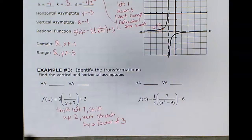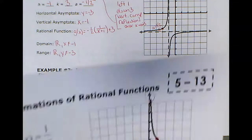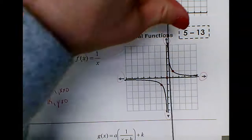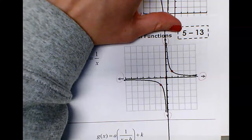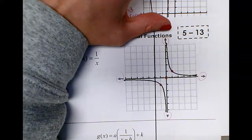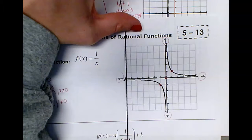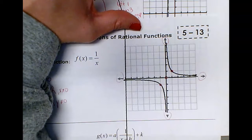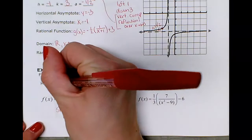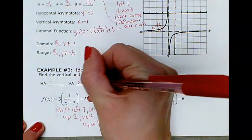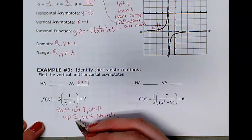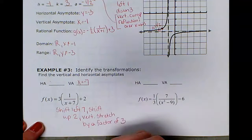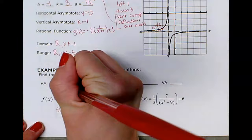Imagining the parent function shifted left 7 and up 2: the original vertical asymptote shifts left 7, going through x = −7. So the vertical asymptote is x = −7. Shifting up 2 means the horizontal asymptote moves from y = 0 up to y = 2.